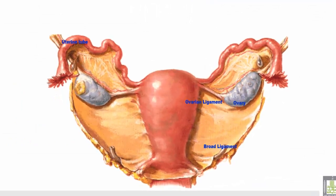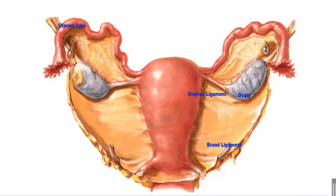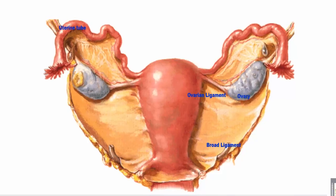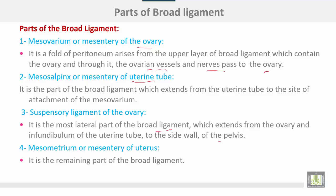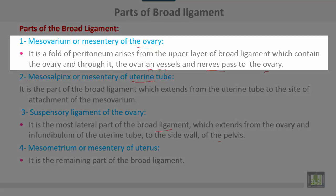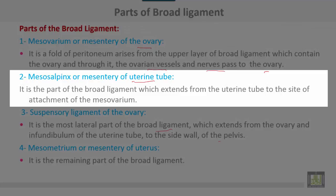Parts of the broad ligament: the free border contains the uterine tube; the posterior or base is related to the pelvic floor. Number one: mesovarium, or mesentery of the ovary — a fold of peritoneum arising from the upper layer of the broad ligament which contains the ovary, and through this mesentery pass the ovarian vessels and nerves to the ovary. Mesosalpinx, or mesentery of the uterine tube, is the part of the broad ligament extending from the uterine tube to the side of attachment of the mesovarium.